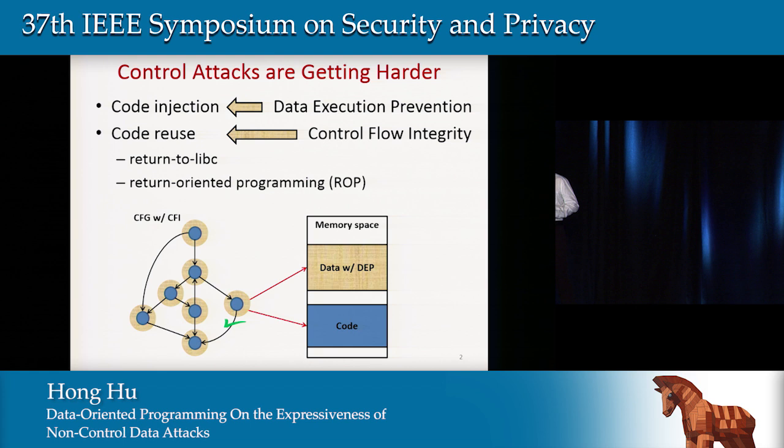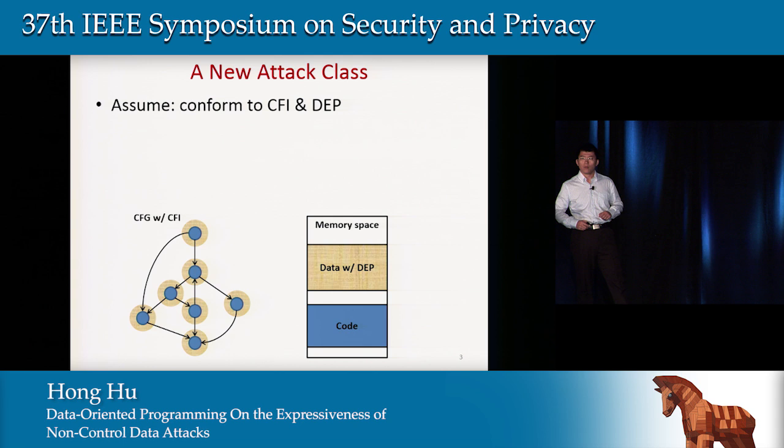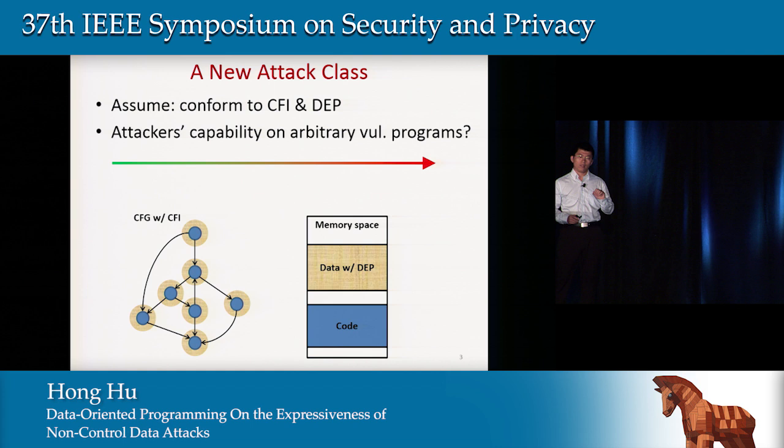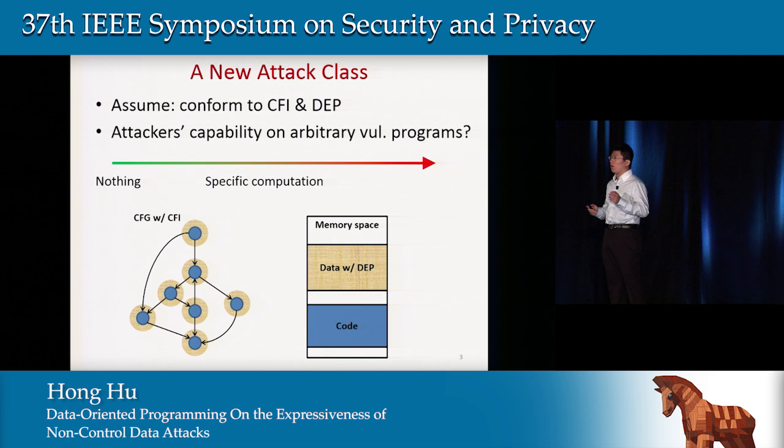But in our work, we want to try a new class of attacks. We assume that the program's execution totally conforms to the control flow graph, and we want to understand what the attack capability is given an arbitrary vulnerable program. So is it true that attackers cannot do anything malicious, or can they do some specific computation, or even worse, can attackers do anything they want — even Turing-complete attacks?